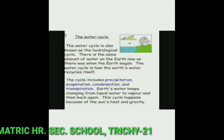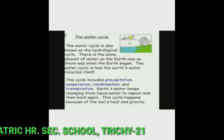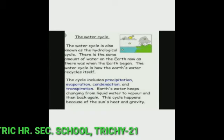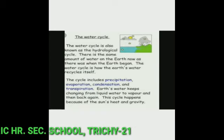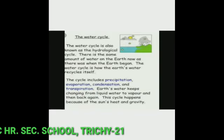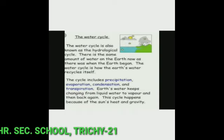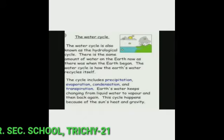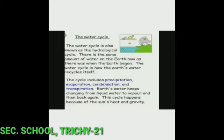The water cycle is also known as the hydrological cycle. There is the same amount of water on the earth now as there was when the earth began. The water cycle is how the earth's water recycles itself.